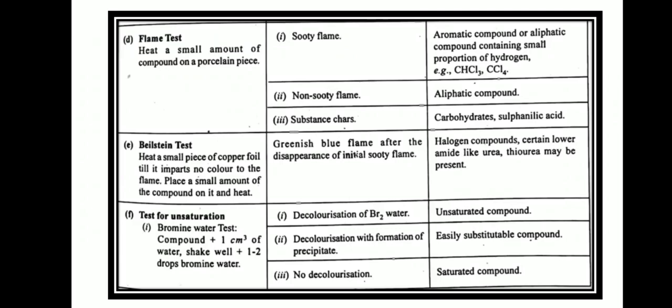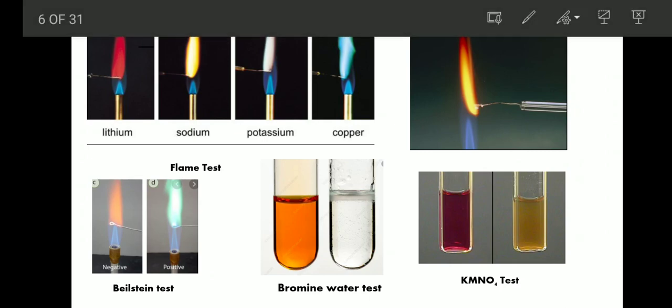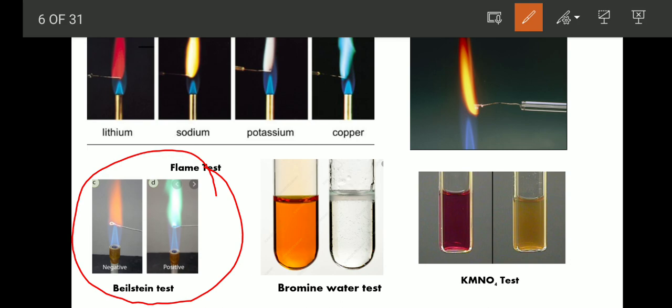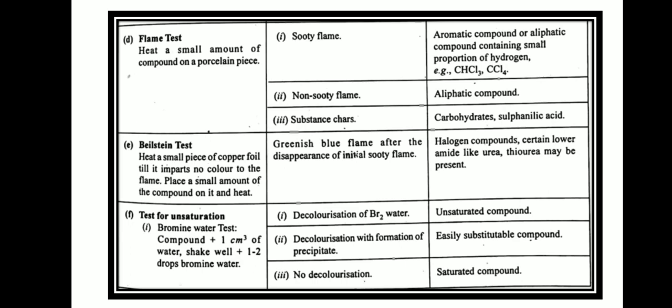The next test is the Beilstein test, which is used to see whether the compound contains halogens. To perform the Beilstein test, heat a small piece of copper foil until it imparts no color to the flame — the copper foil becomes colorless when heated. Then place your compound on that copper foil and heat it again. A greenish-blue flame means halogen compounds, or certain amides like urea or thiourea, may be present. This greenish-blue flame confirms that halogens may be present in your compound.